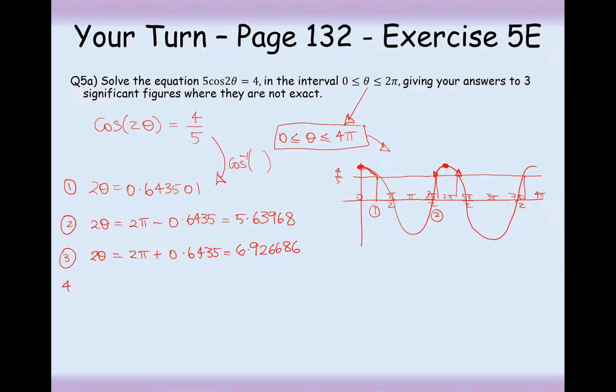And the final solution here is going to be from the peak of 4π, moving backwards by 0.6435. So, in this case here, it's going to be 4π minus 0.6435. So, in this case, I'm going to do 4π on my calculator, take away cos inverse 0.8. My final answer here is 11.92287, basically. Okay, good. Now,